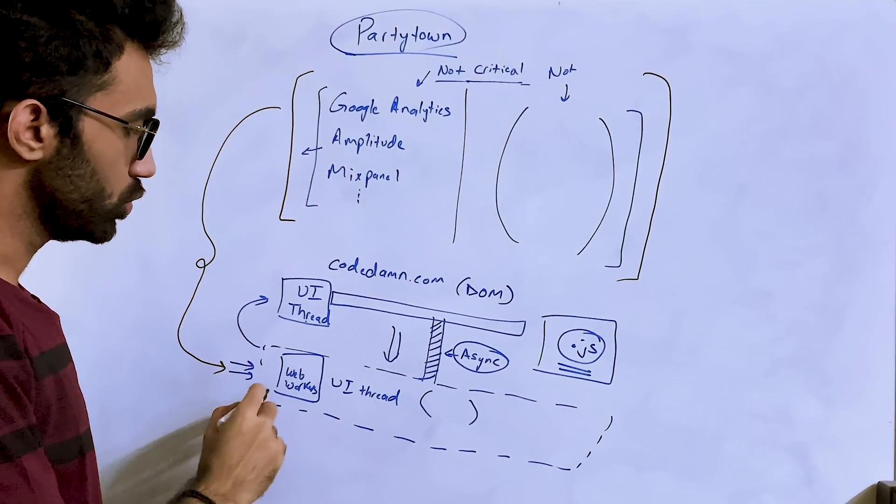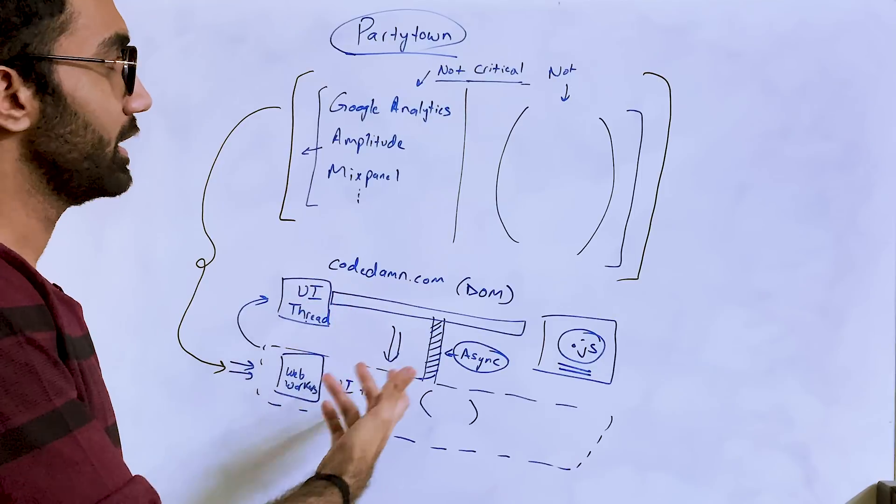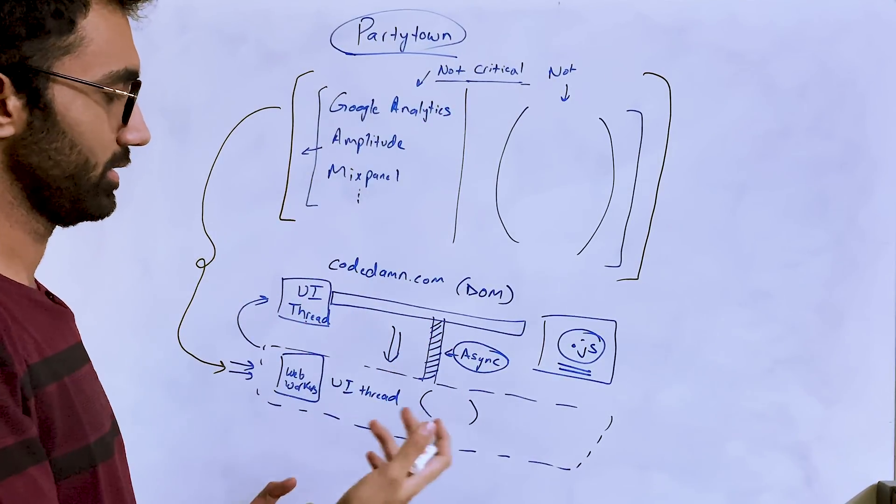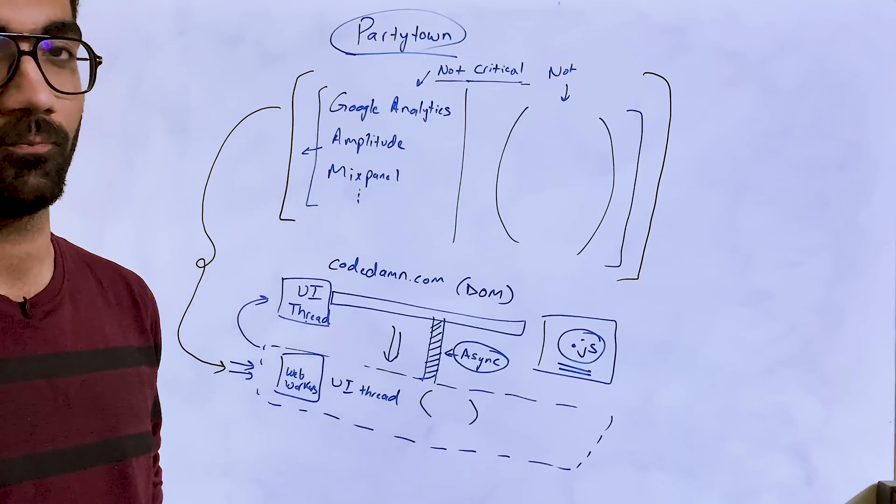What party town does is it can essentially take up all of these scripts whichever you say and it can move the execution of all these scripts from main thread to a web worker, which might seem like an obvious thing to do before this as well. Why does party town exist and why does this make so much sense now?